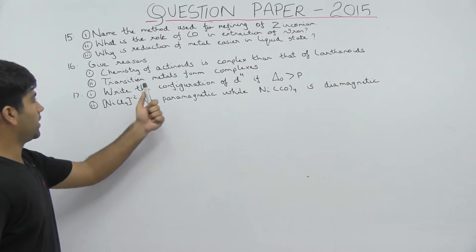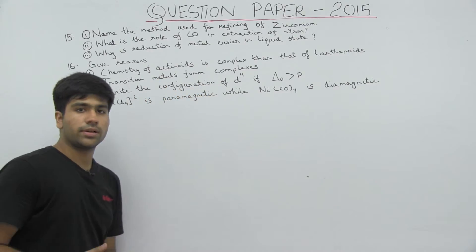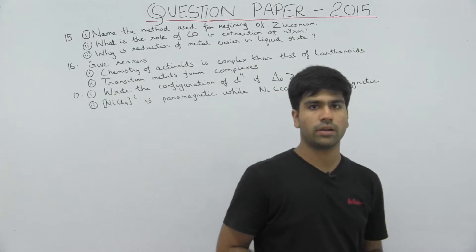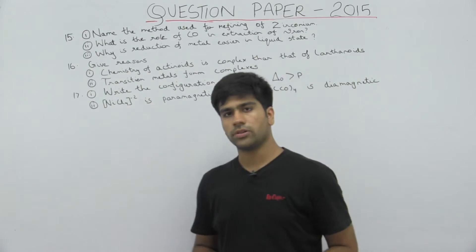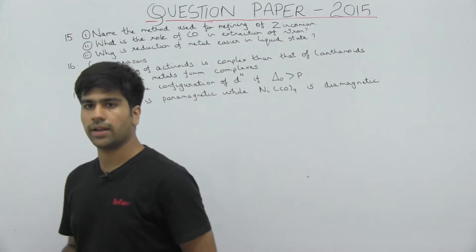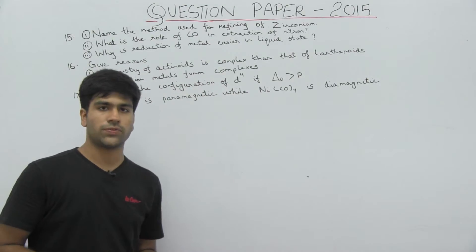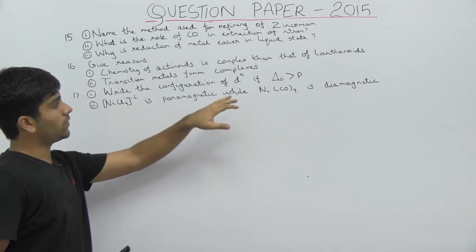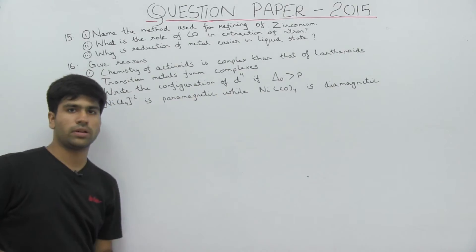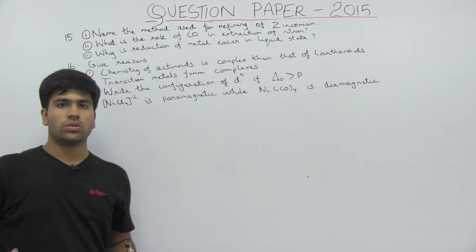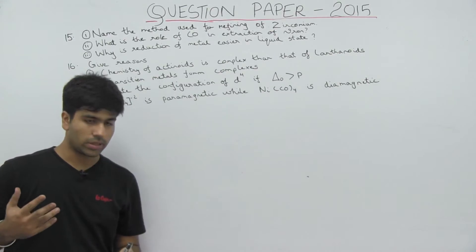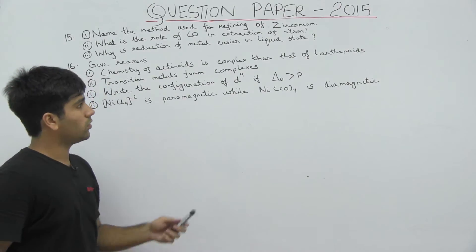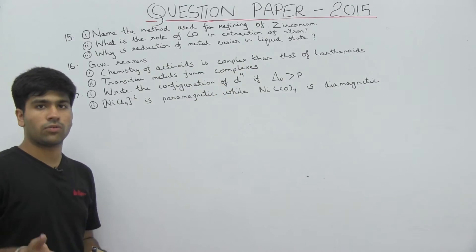The second question: transition metals form complexes. Transition metals have many half-filled or empty orbitals, and they have unpaired electrons too, which can form bonds. They can also form complexes in their vacant orbitals. So in this way, they can accept electrons from ligands through the formation of a dative bond.